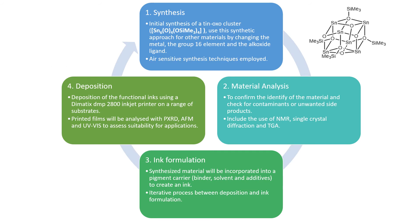The proposed project plan has four main stages: material synthesis, material analysis, ink formulation, and deposition. The first material will be a tin oxo cluster which has been previously proposed for the chemical vapour deposition of tin monoxide. We will then use this approach to synthesize other oxo or chalcogenide clusters by changing the metal, group 16 element, and alkoxide ligand.